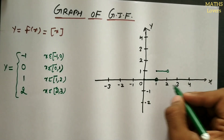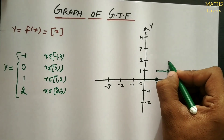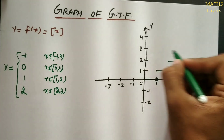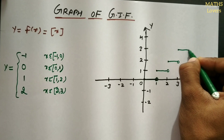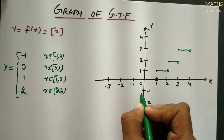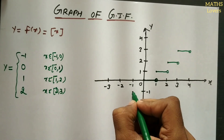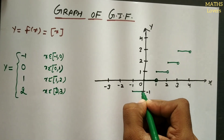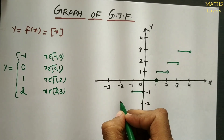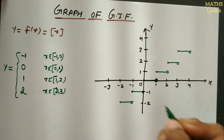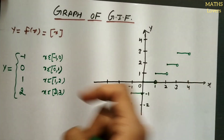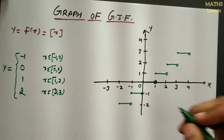For x in [2, 3), y = 2: filled dot at x = 2, open circle at x = 3. Similarly the line continues. For x in [-1, 0), y = minus 1: -1 is included so filled dot there, and 0 is not included so open circle at 0. This creates a stepwise function — that is the graph of y = [x].